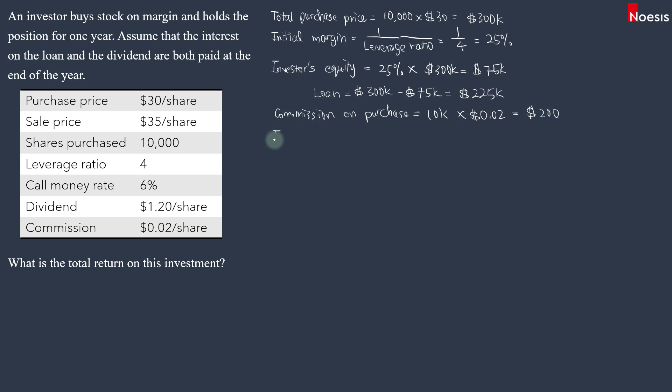Now, the total initial investment today will be the investor's equity, which is $75,000 plus the commission of $200. That will be $75,200.